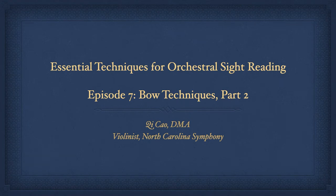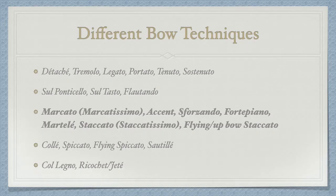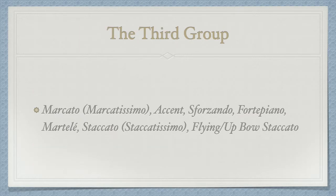This is part two of the violin bow techniques. Continuing from the previous episode, I'm going to cover seven articulations and techniques today. I grouped them in a particular order so that you can compare, identify, and understand how to play them easier and faster. The third group is the most confusing one.